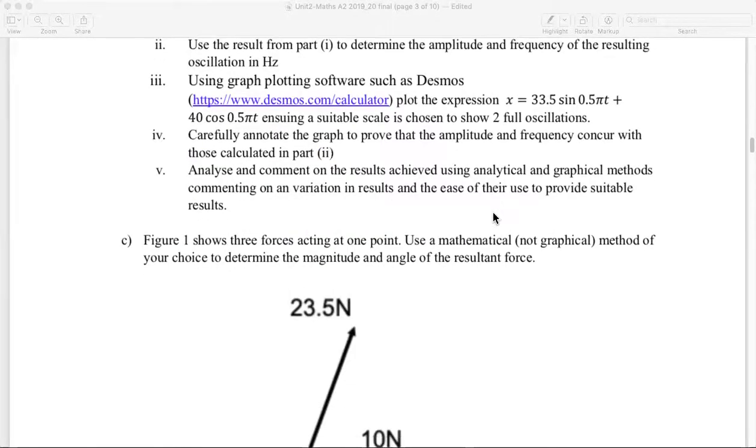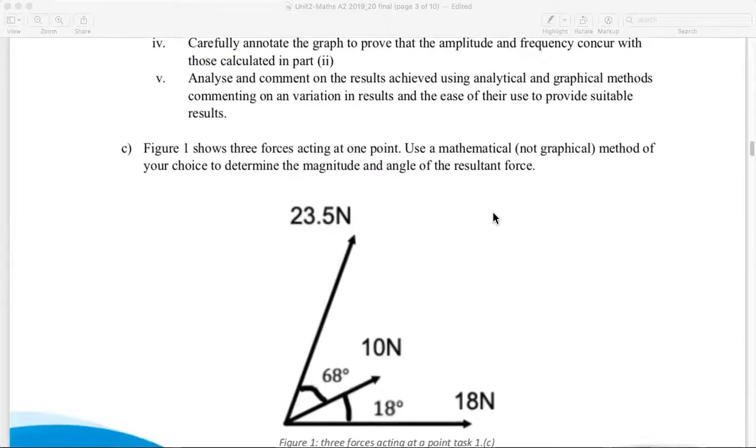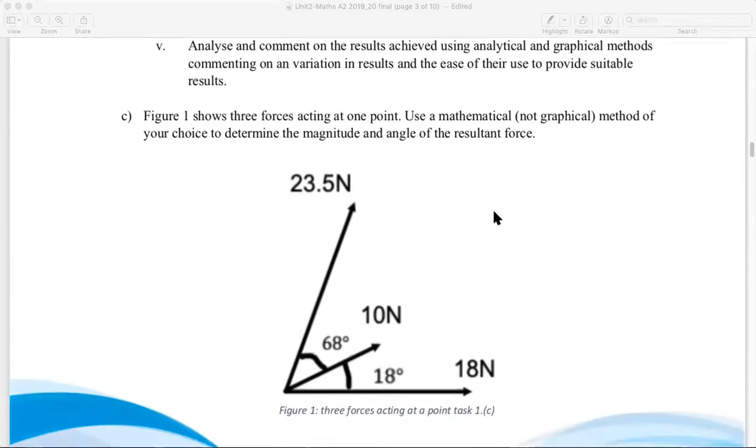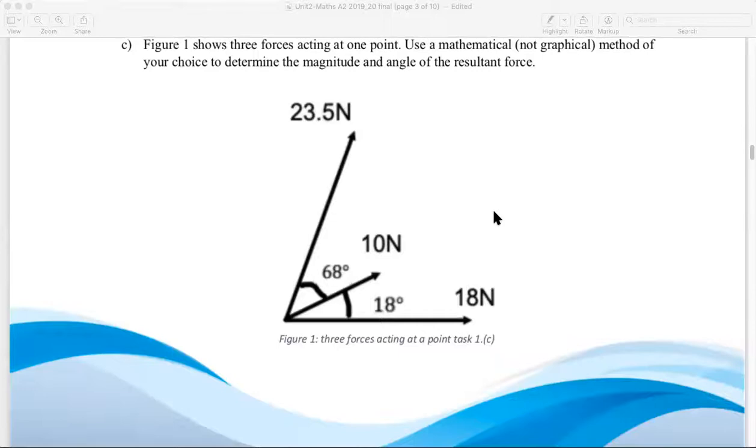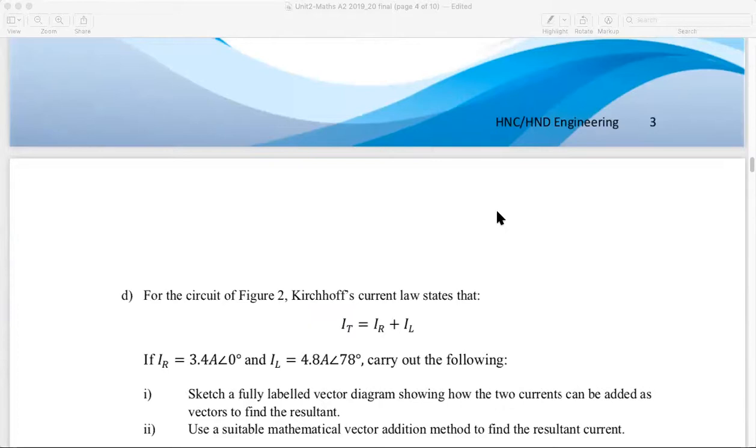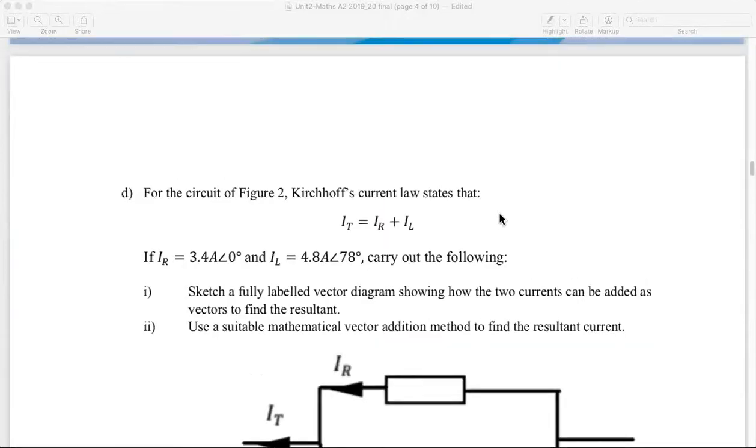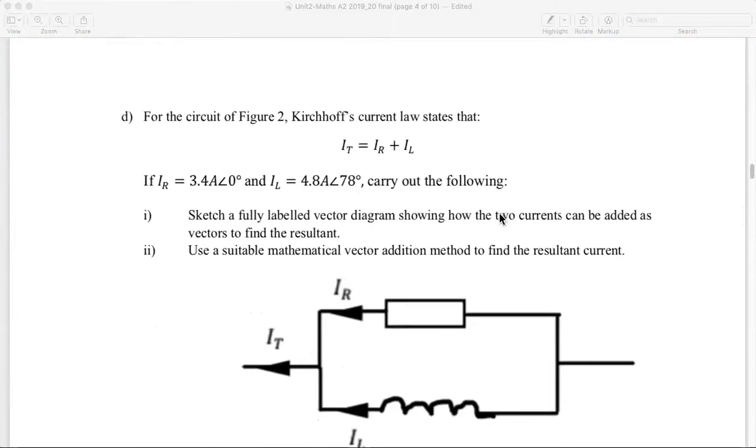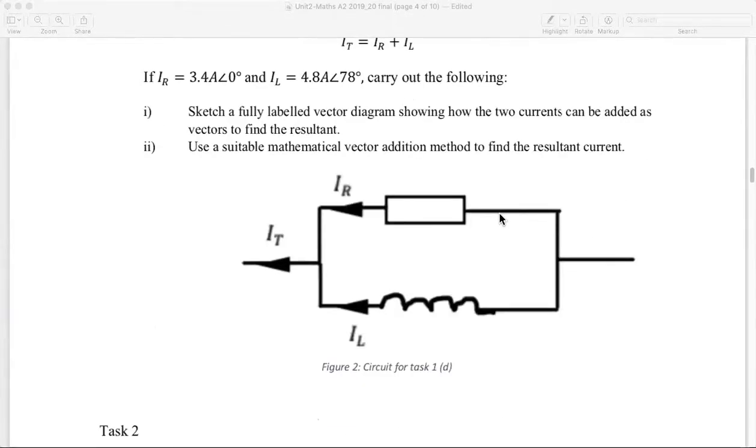Task C covers P7. So that's representing engineering quantities in vector form and use appropriate methodology to determine engineering parameters. So we've covered that all in class. Task D is also P7.